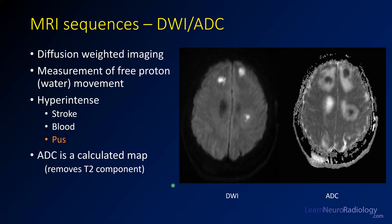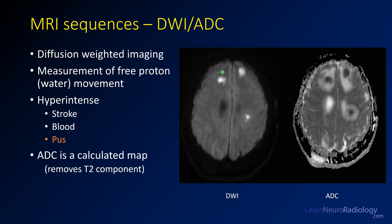MRI has a number of sequences which might help you. The first one to think about is diffusion weighted imaging, or DWI. DWI is a measure of free proton movement in tissue. Areas with restricted proton movement appear bright on DWI, and the corollary image, the ADC, is the calculated map where areas of truly reduced diffusion are dark. Here you can see several areas of reduced diffusion scattered throughout the brain — bright on DWI and dark on ADC. The differential for this is stroke, blood products, or pus. In the context of infection, we're thinking about pus, so a bright loculated lesion like this one is an abscess.